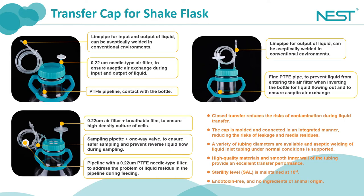What are the advantages of the multifunctional transfer cap compared to the two transfer caps mentioned above? It has an additional function of cell culture. For the two transfer caps introduced above, it is required to replace them with breathable caps for cell culture after completion of liquid transfer. As for the multifunctional transfer cap, cell culture can be started directly after completion of liquid transfer. The cover is equipped with a breathable membrane and an air filter with totally sufficient oxygen flux. Moreover, the multifunctional cap also possesses a sampling function. The sampling tubing is composed of a sampling valve and one-way tubing, and the one-way valve guarantees only outflow to ensure safer sampling.